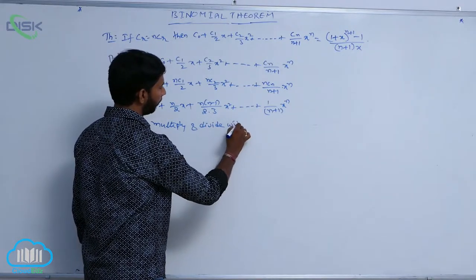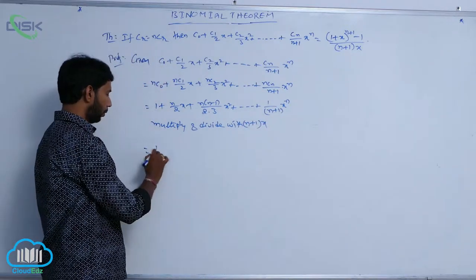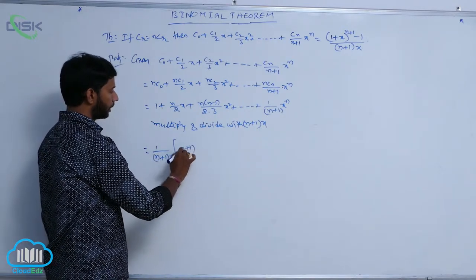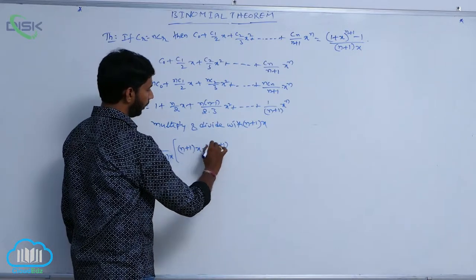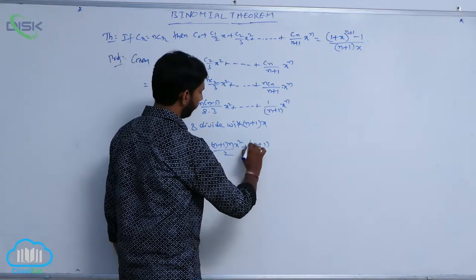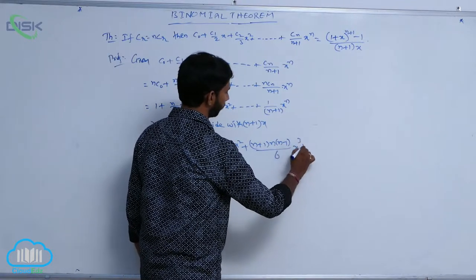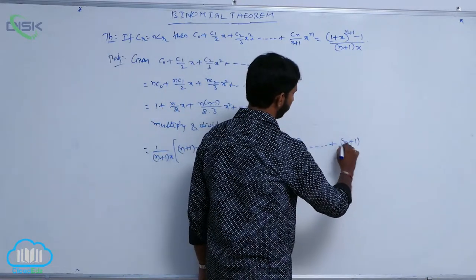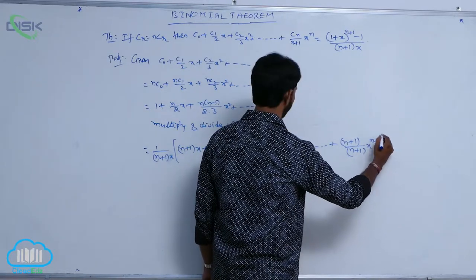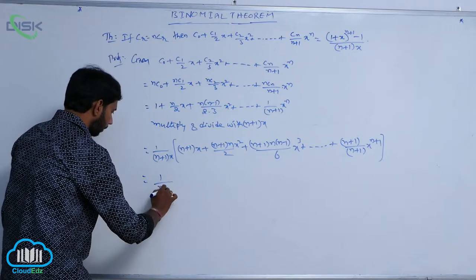Now, multiply and divide with (n+1)x. That is, 1/[(n+1)x] · [(n+1)x²/2 + (n+1)·n·x²/2 + (n+1)·n·(n-1)/6·x³ + ... + (n+1)/(n+1)·xⁿ⁺¹] · x. This equals 1/[(n+1)x].